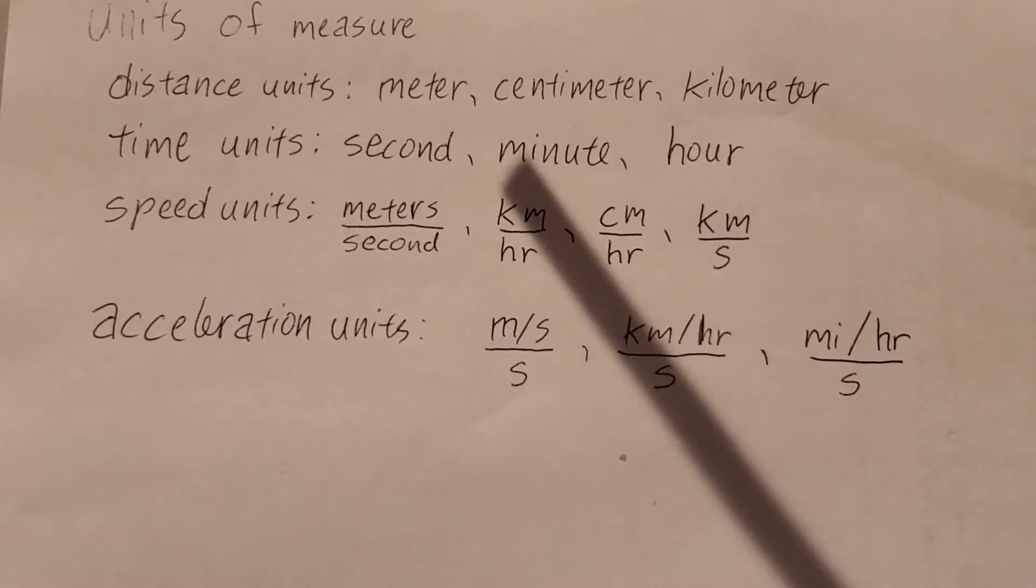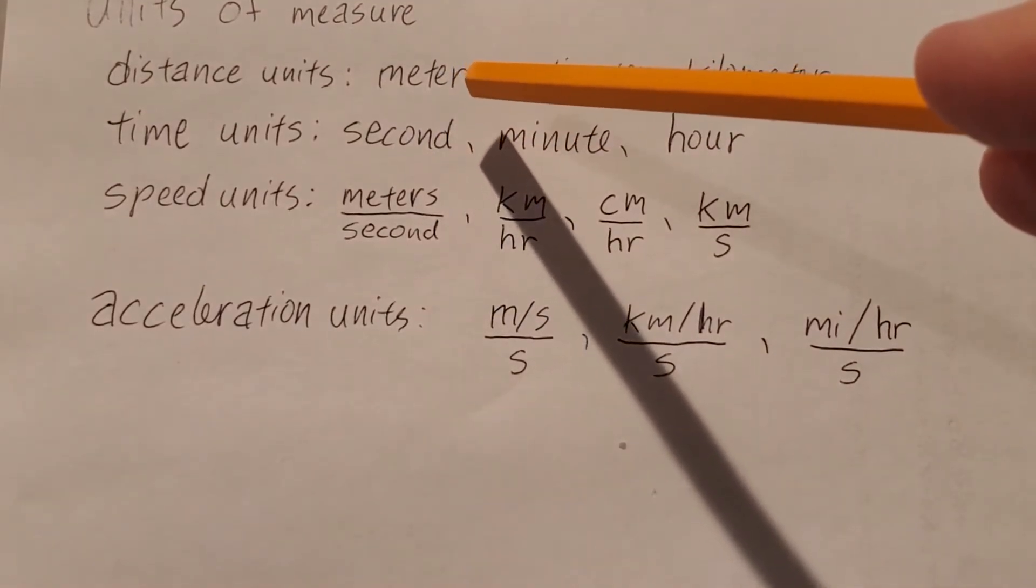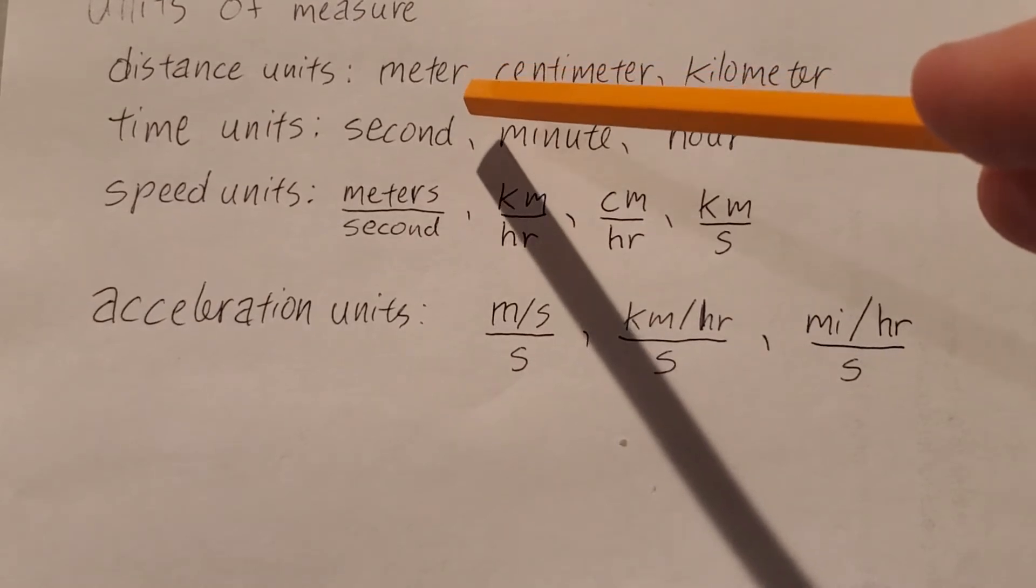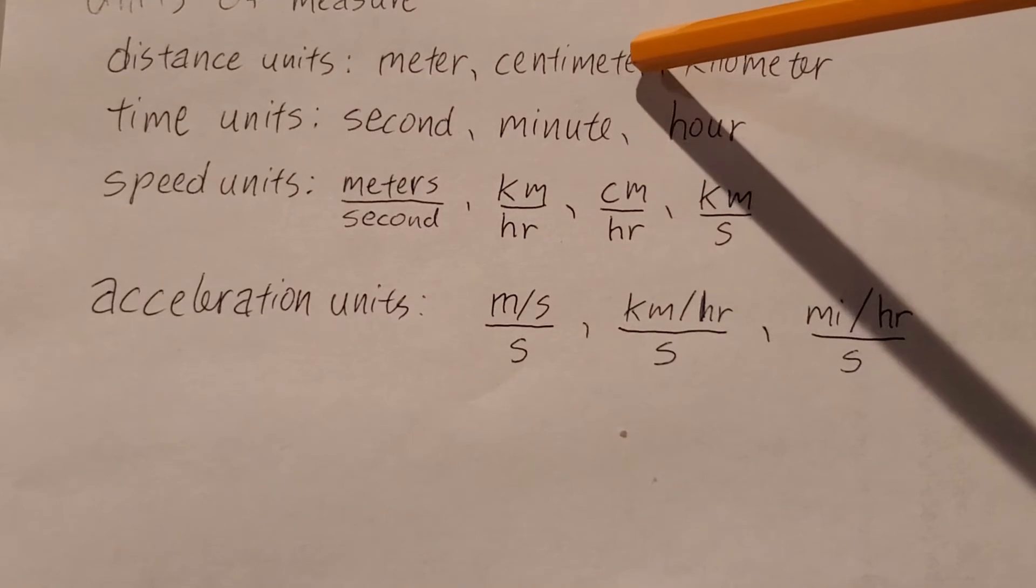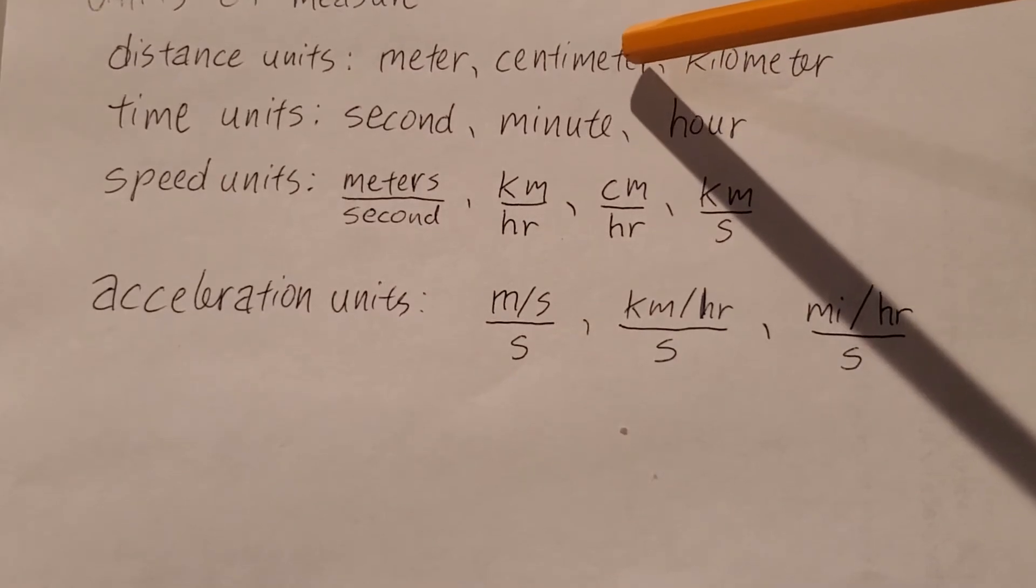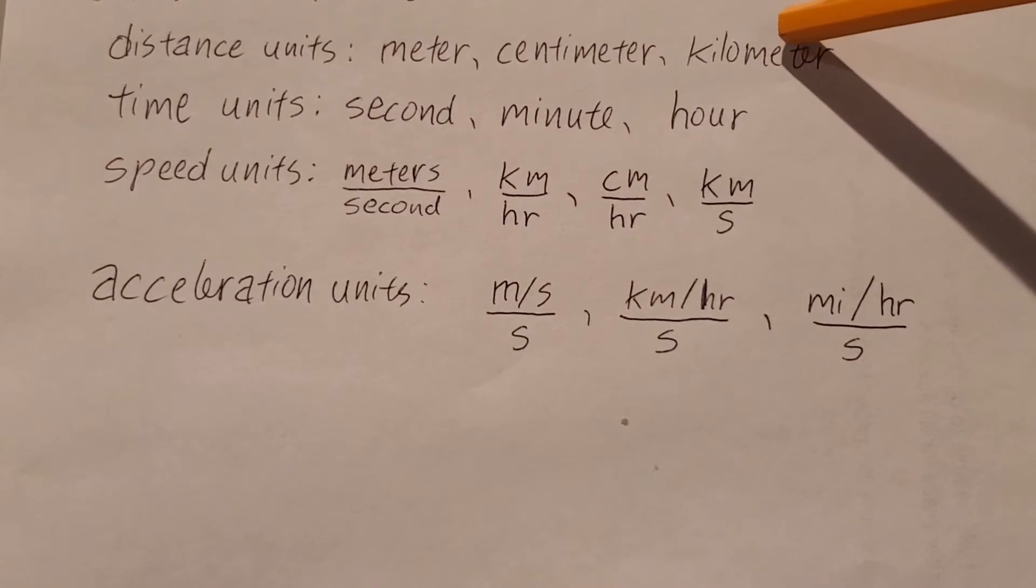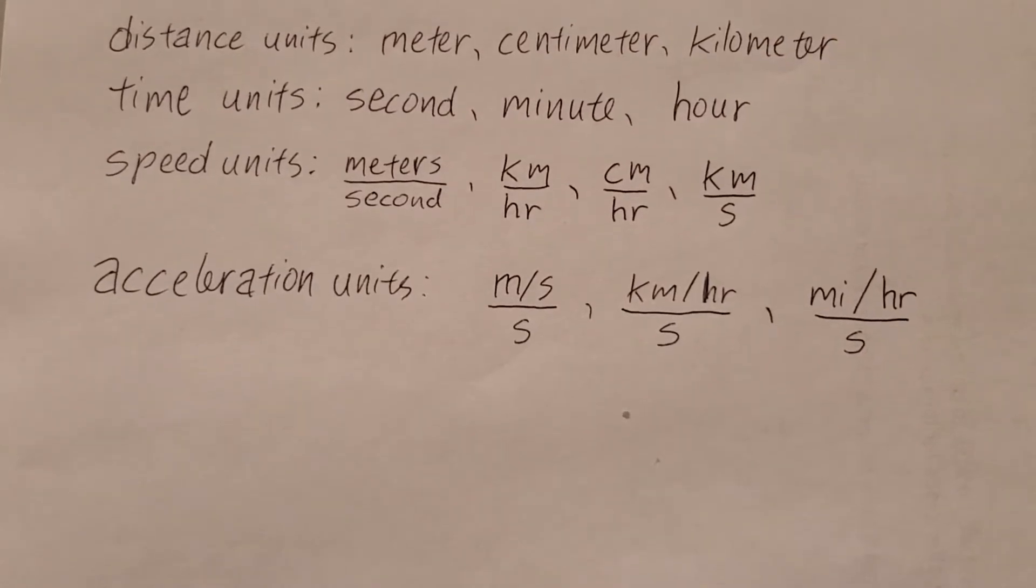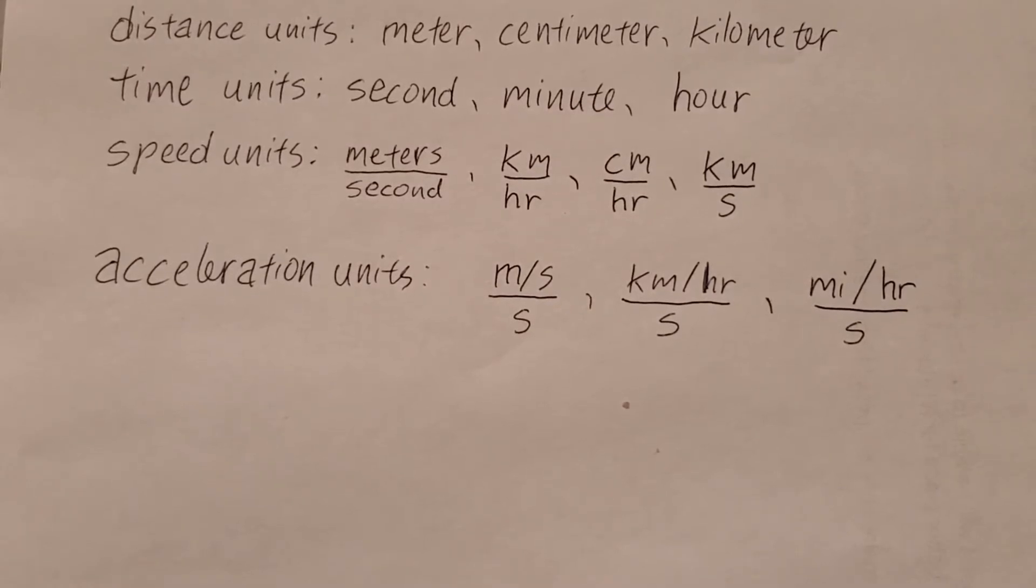Now, distances can be represented with meters. A meter is about the height of a doorknob. They can be represented with centimeters. That's a meter chopped into a hundred pieces. Maybe that's the width of your finger. They can be represented with kilometers. The kilometer is two and a half laps on the track. So whenever you say a distance, you need to make sure you have a distance unit attached to it.